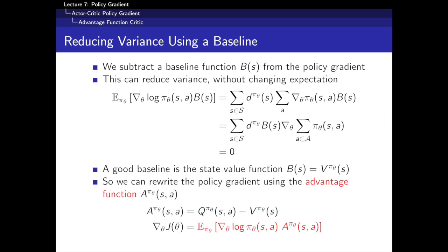Whenever we have our value function — and our policy gradient theorem told us that the direction we want to move is the score function multiplied by Q — this result tells us we can add or subtract anything we want from Q. As long as that thing is just a function of state and not a function of action, we can add or subtract anything to control the variance of this term. We want this expectation to be low variance but without changing the direction of ascent.